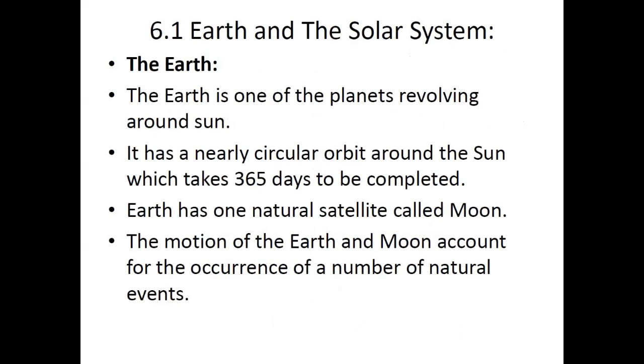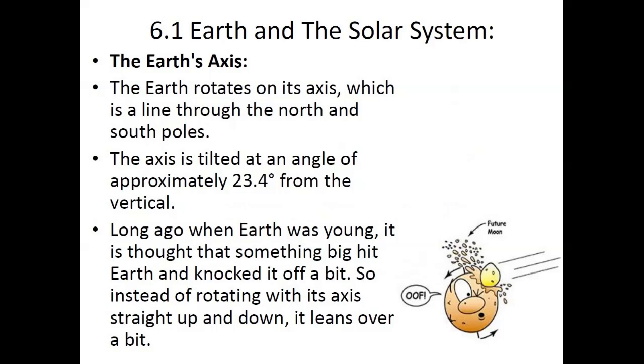Earth is one of the planets revolving around our sun. It has a nearly circular orbit around the sun which takes approximately 365 days to be completed. One Earth year equals 365 days. Earth has one natural satellite, the moon. The Earth's axis is a line through the north and south pole, tilted at approximately 23.4 degrees from the vertical.